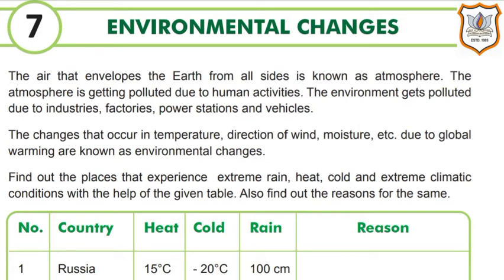What is atmosphere and why is it polluted? The covering of air on all four sides of the Earth is known as atmosphere. Atmosphere gets polluted due to human activities like setting up of industries and factories, running power stations, and moving vehicles.